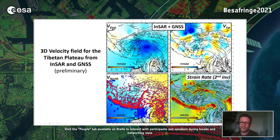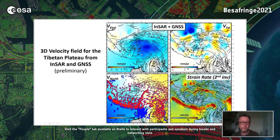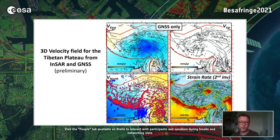One of the most interesting things are these potential long-wavelength vertical signals, perhaps consistent with the long-wavelength buckling proposed by Bischoff and Flesch. You also see strain concentrations around some of the major structures. Comparing between the GNSS-only field and the INSAR-plus-GNSS field, you see more detail in the INSAR field. Where you've got relatively sparse GNSS, small variations can give areas of noise. We end up fitting the INSAR to around 2.3 millimeters per year and the GNSS to about 1.2.